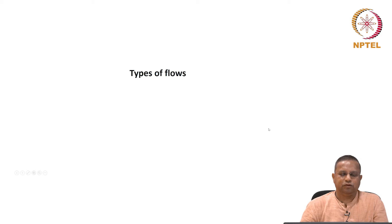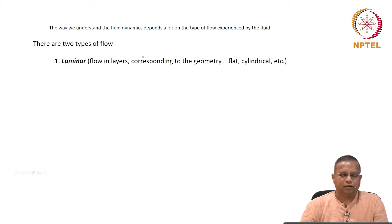There are two broad types of flow. One is called laminar flow. Laminae means layers, so this flow happens in layers. The layers depend on the kind of geometry that we have.